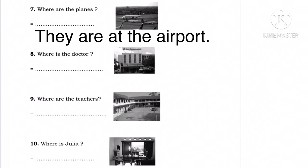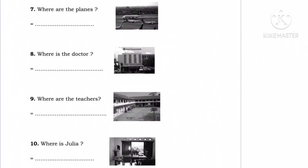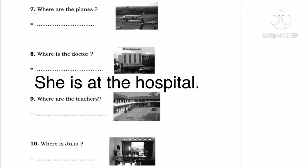Ingat ya, mereka di sini bukan untuk orang, tapi untuk pesawat yang jumlahnya lebih dari satu. Number eight. Where is the doctor? Di mana dokternya? Anggap saja dokternya di sini adalah perempuan, maka kita ganti dengan subjek she. Jangan lupa letakkan to be is setelah subjek she. Jadi, jawabannya adalah she is at the hospital — dia berada di rumah sakit.